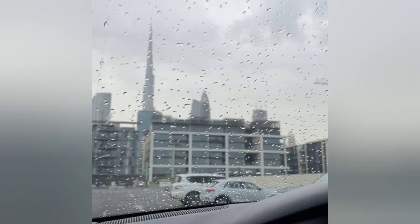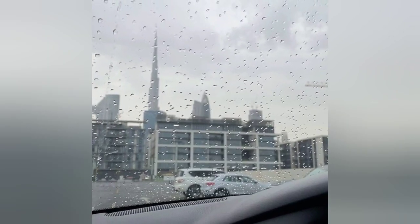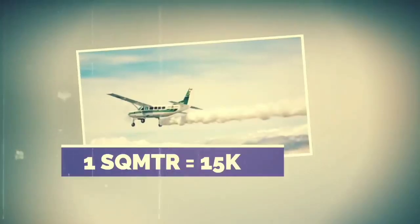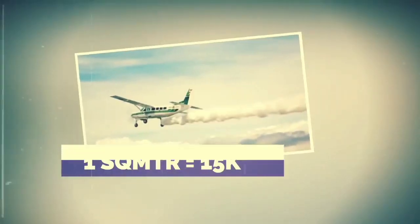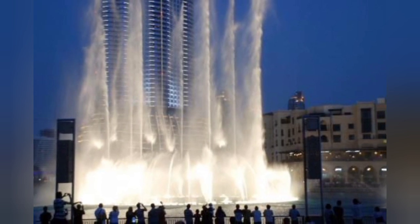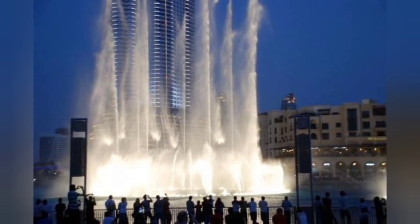The artificial rain project in Dubai is a promising new technology that could help to address the water challenges facing the country. The project is still in its early stages, but the results so far have been promising.